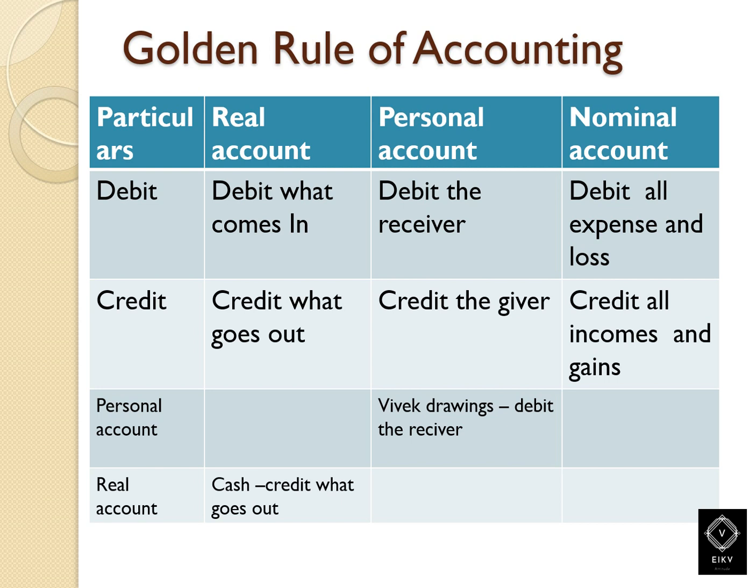As you all know the golden rules of accounting: we have real account, personal account, and nominal account. The rules are — real account: debit what comes in, credit what goes out; personal account: debit the receiver, credit the giver; nominal account: debit all expenses and losses, credit all incomes and gains.